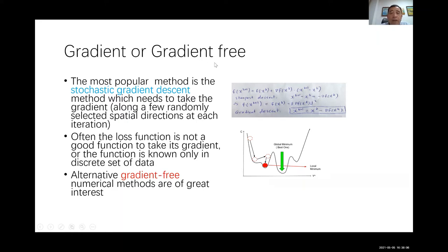SGD is the essential mechanism driving the success of deep neural networks. However, when using gradient descent you have to take gradients — and there are cases where you cannot, maybe f does not have a gradient. In many machine learning algorithms you encounter the difficulty of gradient vanishing or gradient exploding. Therefore, a gradient-free method seems attractive for many applications — you only have to evaluate the function.